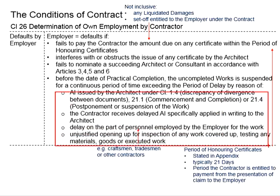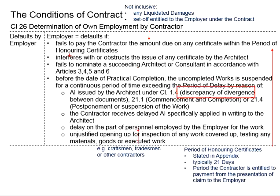The circumstances that can constitute employer default include, first, a discrepancy or divergence between documents. When the contractor detects discrepancy or divergence in the contract documents, the contractor needs to seek clarification to rectify this by sending a notice to the architect. However, if this leads to a pending situation where the contractor cannot carry out the work and the pending duration exceeds the period of delay, then the employer can be considered in default.